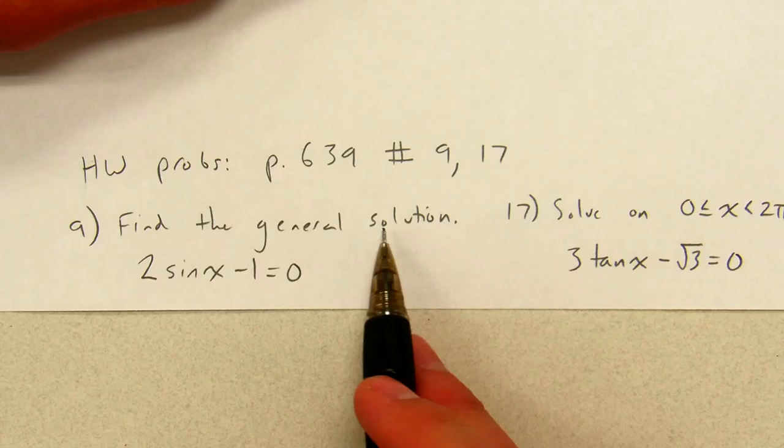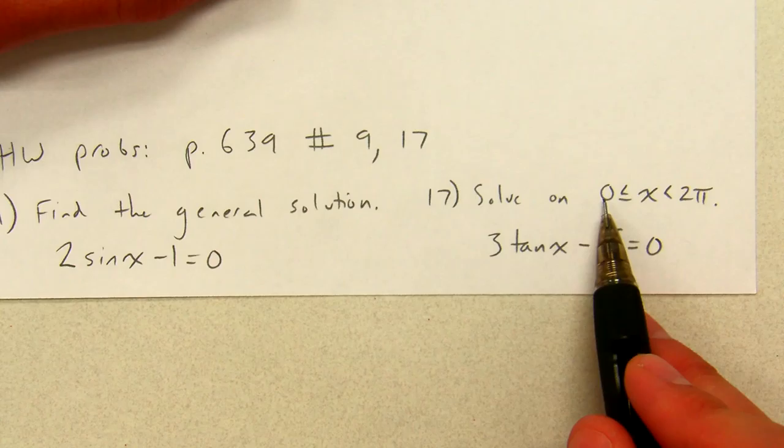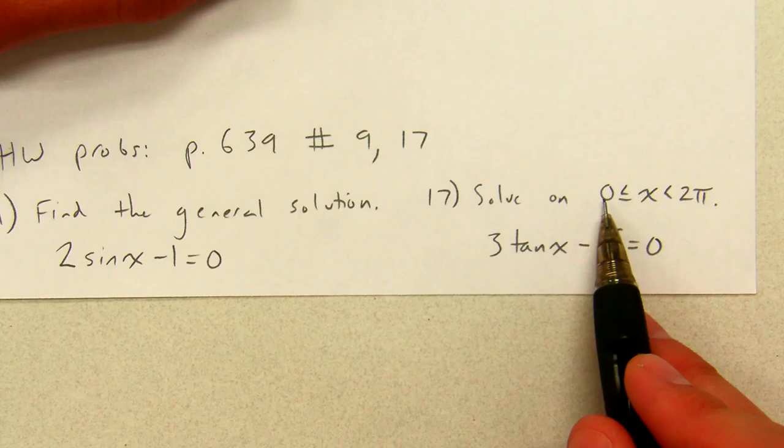So number 9 is to find the general solution: 2 sine x minus 1 equals 0. And number 17 is to solve on the interval from 0 to 2 pi: 3 tangent x minus root 3 equals 0. These are both a little bit easier than the previous two examples, but we'll have a chance in class to do more of the complicated ones. I'll see you then.